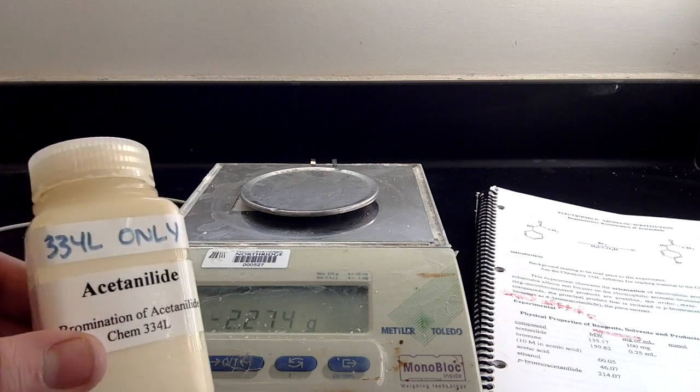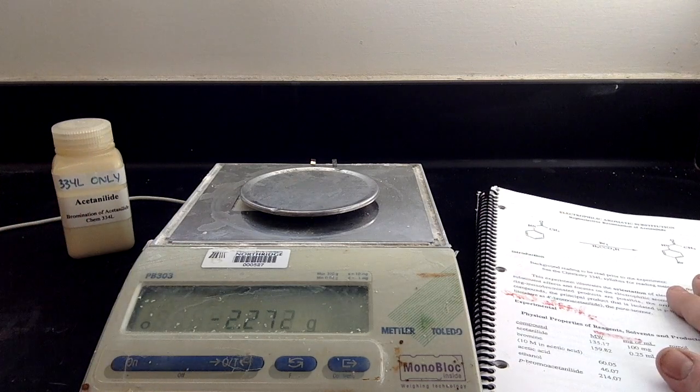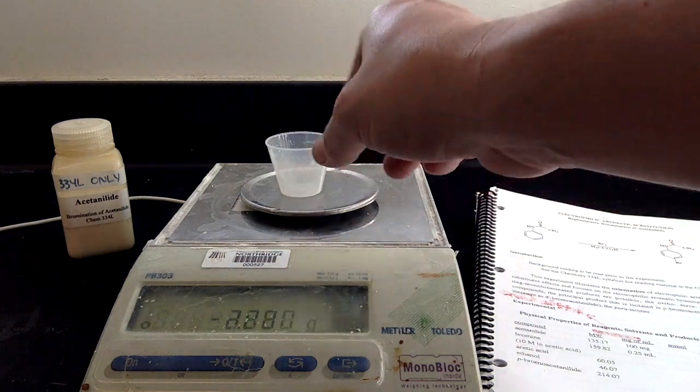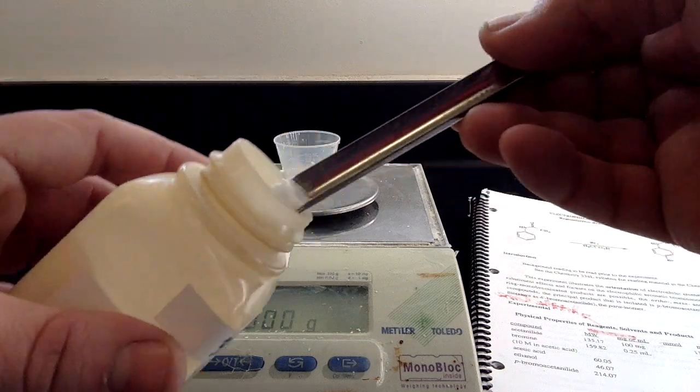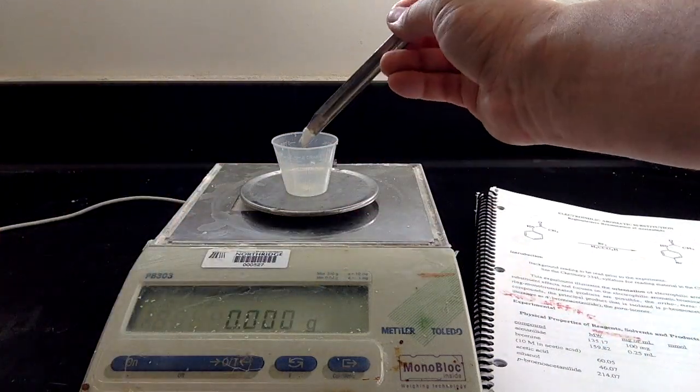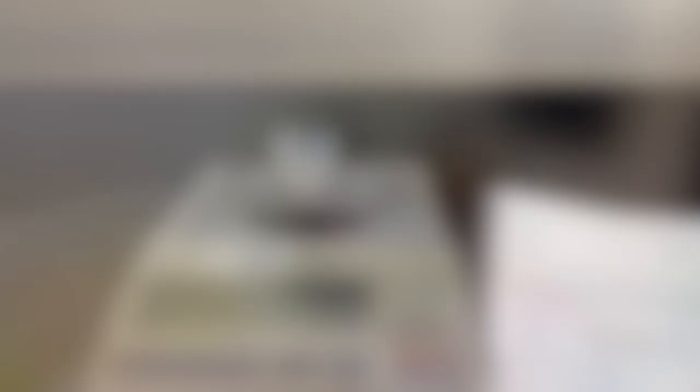Remember when you're measuring the acetanilide to have something to write it down with. The actual amount you take is more important than the amount that tells you to take in the book. Plus or minus 20 milligrams will be good from the 100 you need to take. Let's see what I got, 95, that's great.